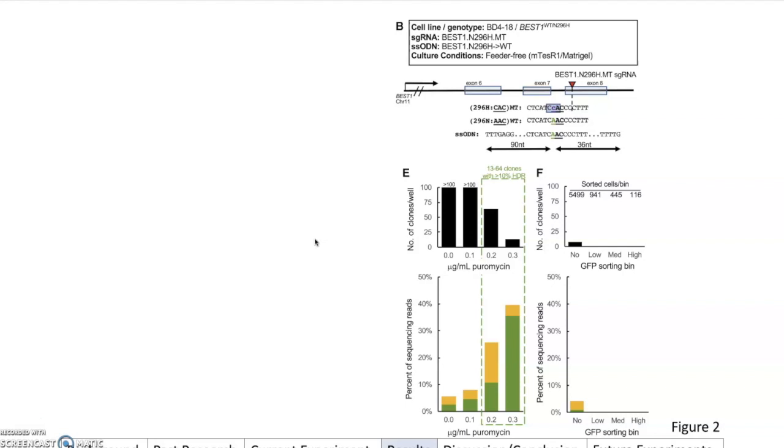Next, they basically repeated the same thing, except they used a different cell line and a different mutation. The cell line that they're using this time is VD4-18, and the mutation that they're going to try to fix is the N296H. This still correlates to the BEST1 mutation. Your sgRNA changed too, so now your sgRNA is going to focus on that N296H mutation, and then your ssODN is going to try to repair that mutation back to the wild-type form. Similarly to before, you have your mutated genome sequence, you have your wild-type genome sequence, and then you have your ssODN which is trying to convert this mutation back to its wild-type state.